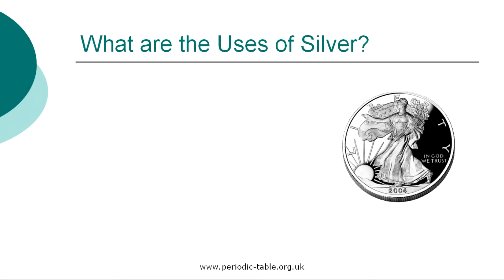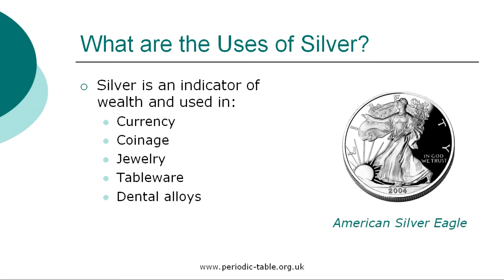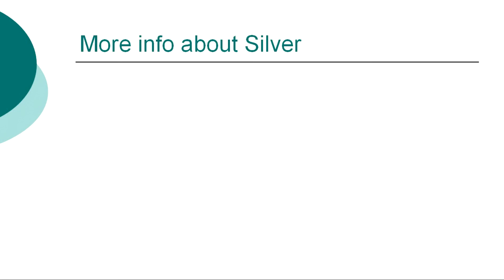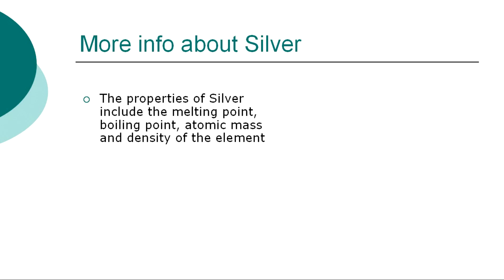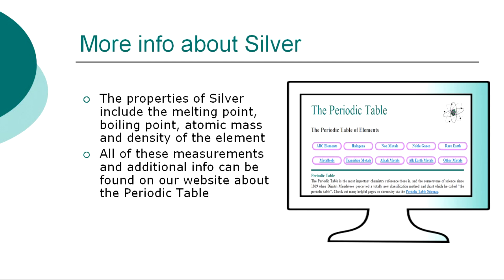Once the properties of an element have been established, we then have the ability to identify how it can be used. Silver has always been used as an indicator of wealth, and the New World expeditions and conquests in the early 1500s enriched the Spanish Empire for 300 years. Silver has a great variety of uses, including currency, coinage, jewelry, tableware, and dental alloys. The properties of silver are classified by many other factors, including the melting point, boiling point, atomic mass, and density of the element. All of these precise measurements, together with additional facts and information, can be found on our website.